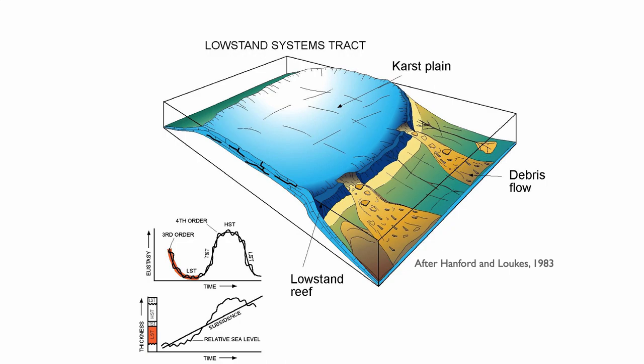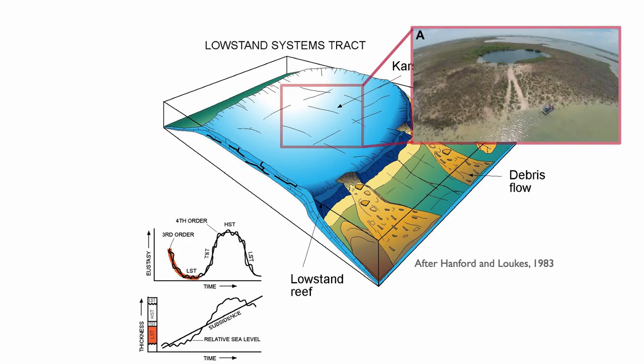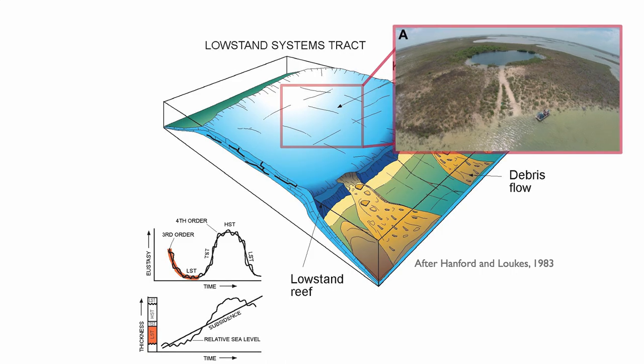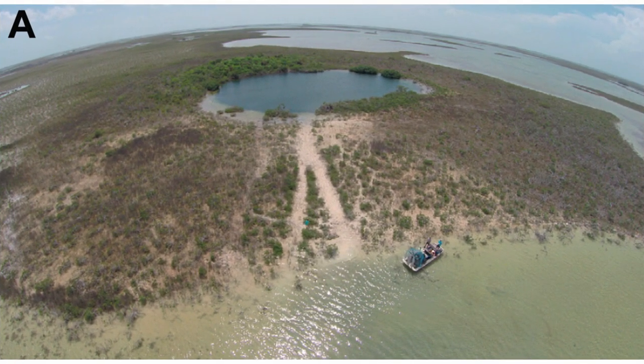We'll have a chance to look in more detail at this phenomenon when we look at diagenesis. But it implies that during low stand, you can have a lot of carbonate dissolution, karstification, etc., and that can give rise to sinkholes. Here in the Bahamas is a beautiful example of a sinkhole — you see that lake right there? It's essentially a sinkhole that is now filled with water. So dissolution is one important feature.